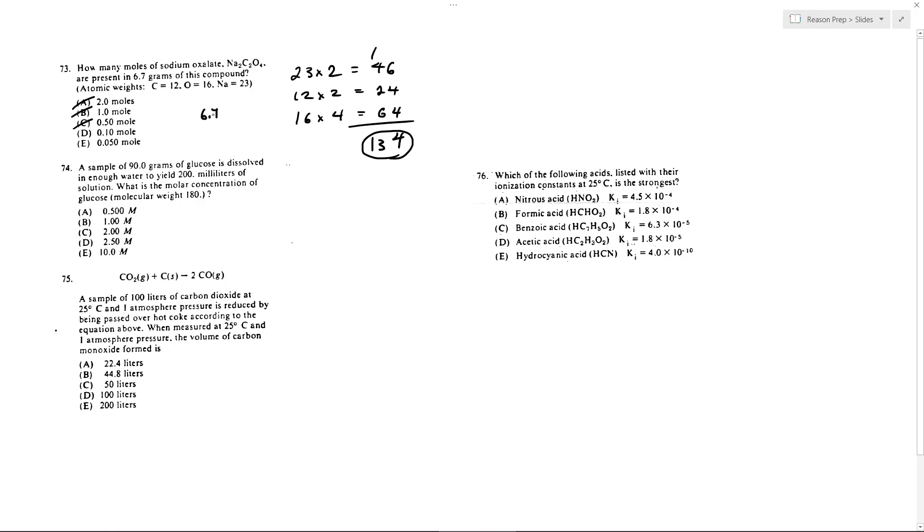But to find the moles, I would just divide the number of grams by the grams per mole. And you might see that 6.7 times 2 is 13.4. 13.4 is 10% of 134. And so 6.7 must be 5% of 134. Or this must end up getting you 0.05 mole.